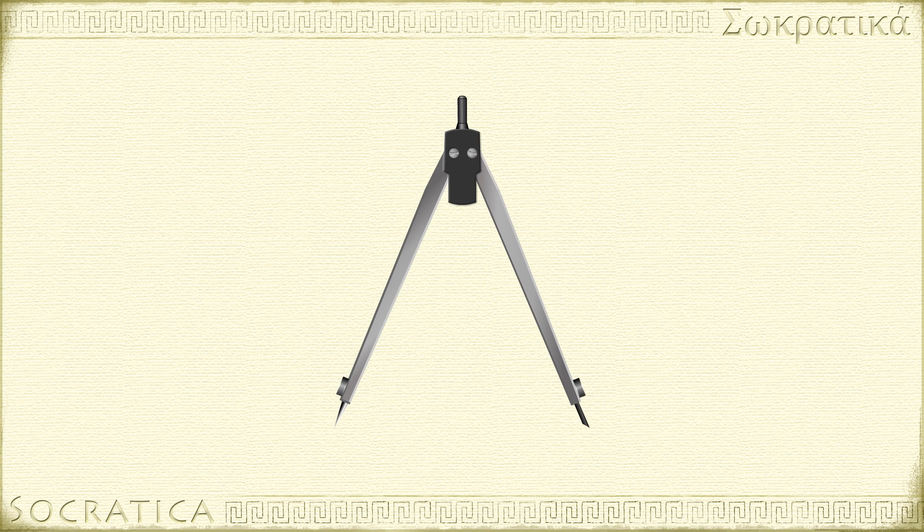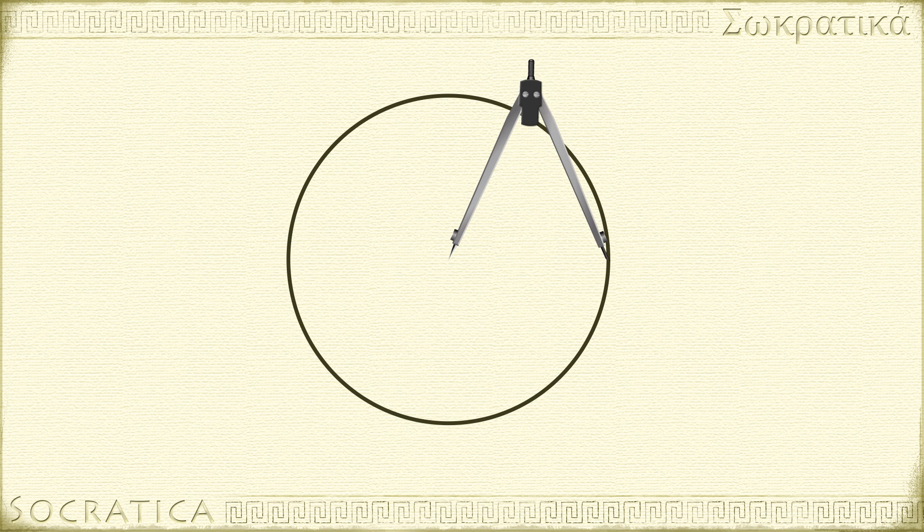Simply open the compass until you find the radius you desire, then put the metal end on your paper. While holding the top, rotate the compass until you have a circle.